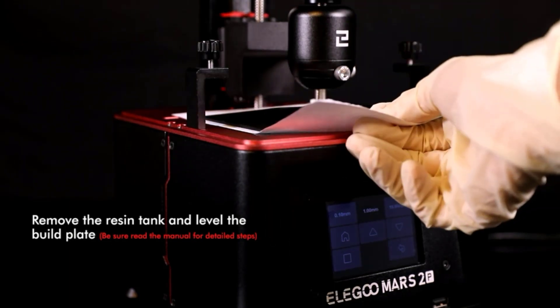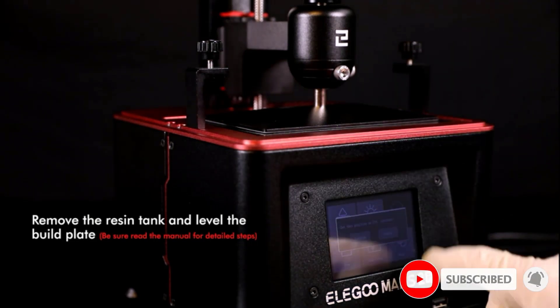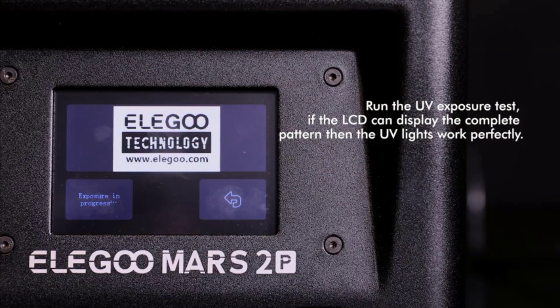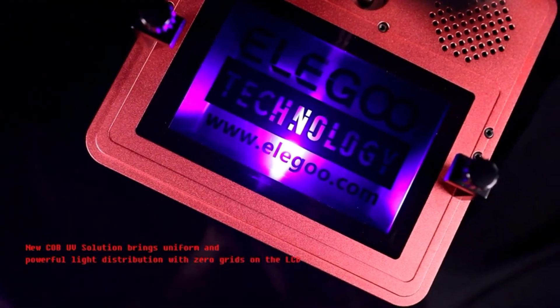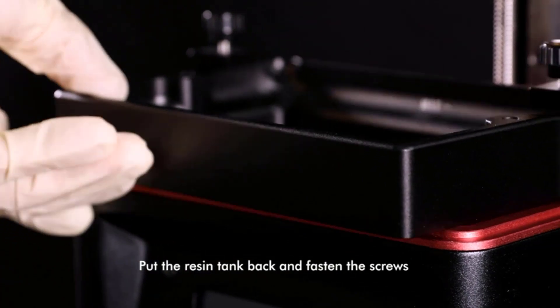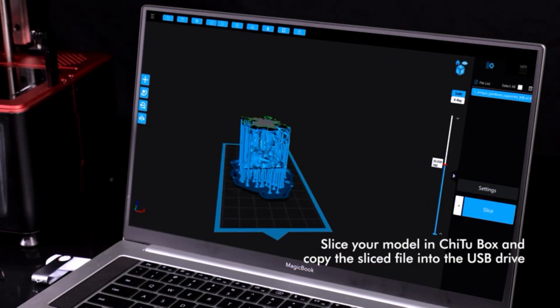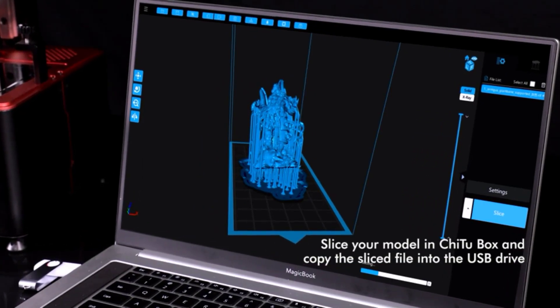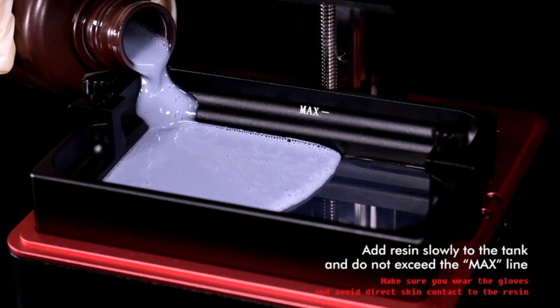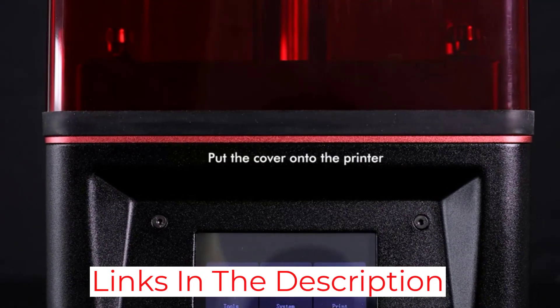If your ears might have suffered under machines like the Tronxi and the Sovel, it will let out a sigh of relief with the Mars 2. This is a quiet little machine that just does its job without the whining. The previous iteration of the Mars 2 Pro came with a layer curing time of 6 seconds. But the Mars 2 has a curing time of 1-2 seconds. So the printing is super fast. This is due to the monochrome LCD which lets through a greater intensity of ultraviolet light. The Mars 2 Pro also has a better build plate compared to the Mars Pro which massively improves upon the printing experience.